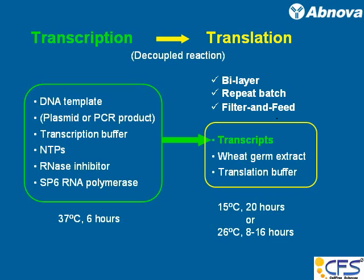Our system is a decoupled reaction using transcription and translation separately, with either a plasmid or PCR product as the DNA template, along with transcription buffer, NTPs, RNA inhibitor, and SP6 RNA polymerase. Transcription is done at 37°C for 6 hours in the current protocol. Then the whole transcript is used for translation, where the wheat germ extract is the translation machinery. The current protocol is 15°C for 20 hours, or you can use room temperature with a shorter reaction time.